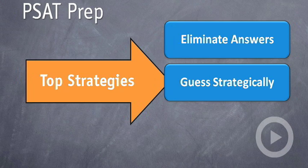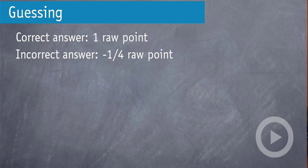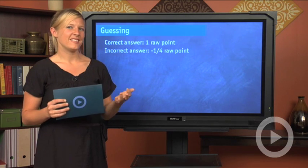Hand in hand with eliminating answers is guessing strategically. What do I mean when I say guessing strategically? The PSAT, like the SAT, is a numbers game. Just like the SAT, on the PSAT, when you get one correct answer right, you get one raw point. When you get an answer wrong, you get negative a quarter raw point. These raw points translate to scaled scores.